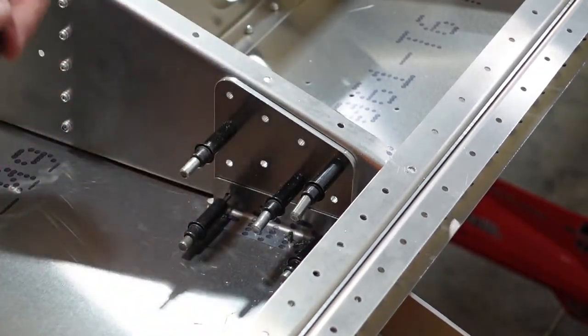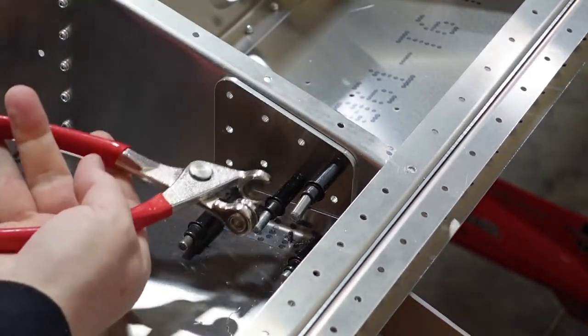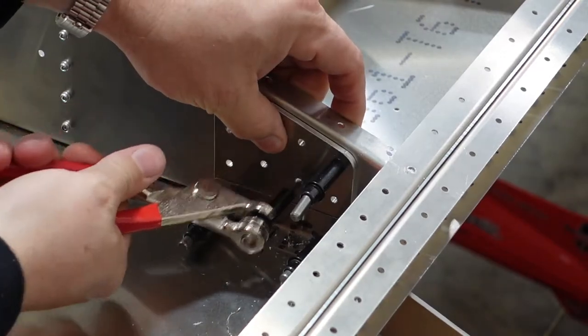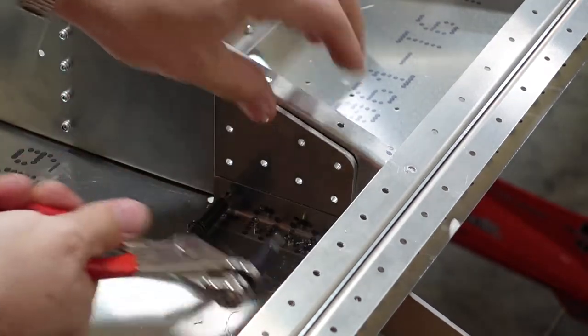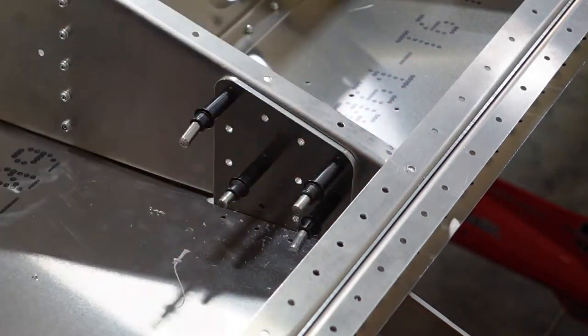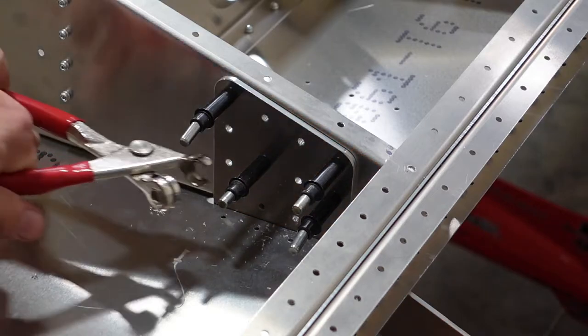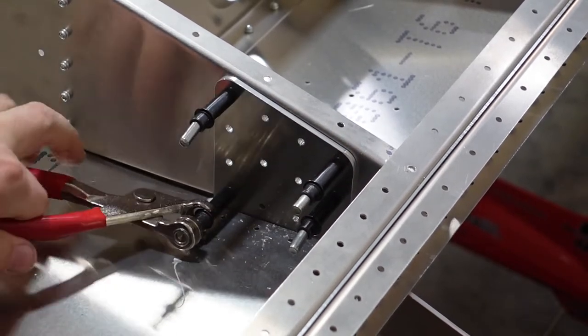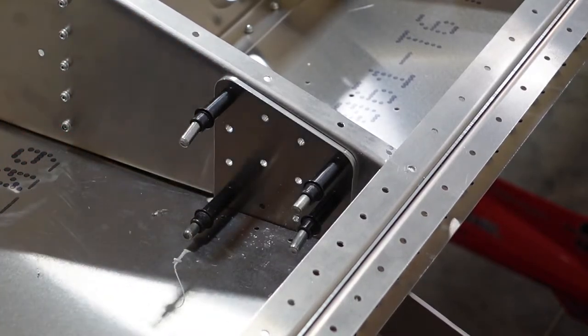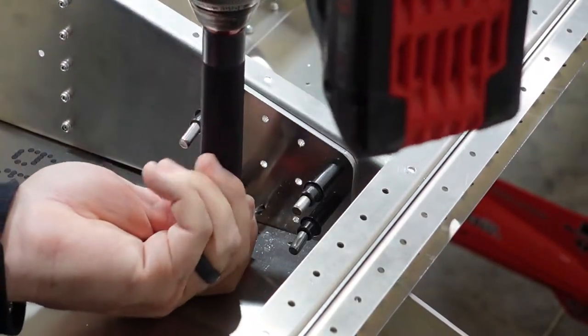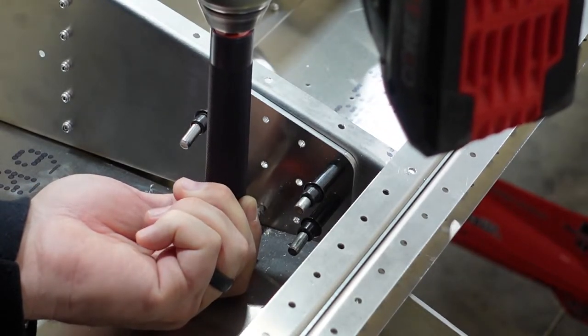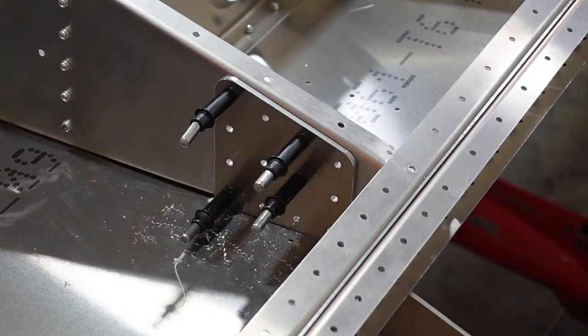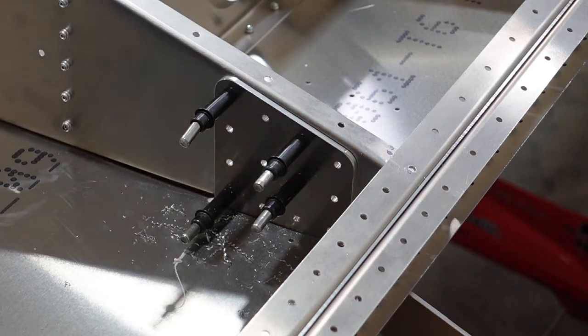Now we can take the Clicos out and deburr our holes. Actually, I'm going to have to pull this off to get that angle bracket off so I can get those holes drilled. We got the angle drill out to accomplish getting these holes drilled here since we have tight clearances. So we got the holes drilled. We'll get that bracket off, deburred up.